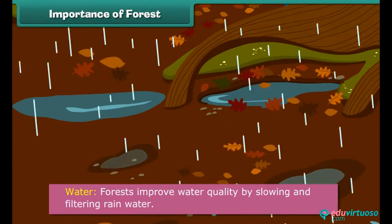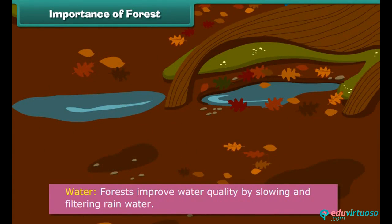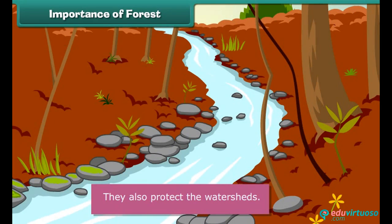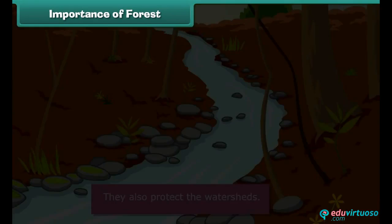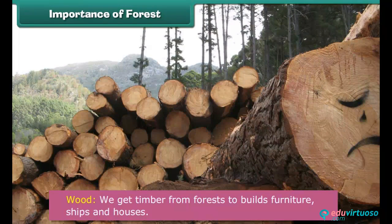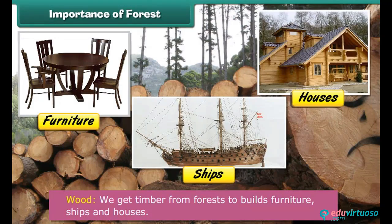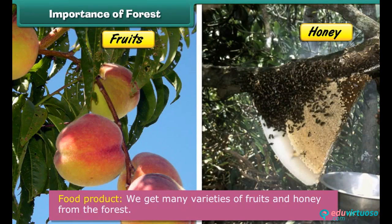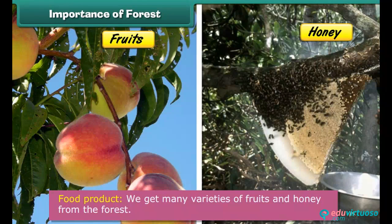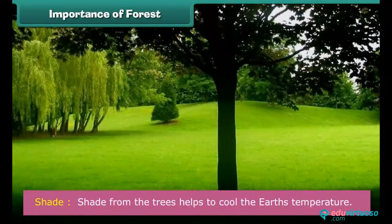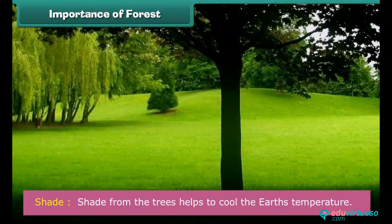Forests improve water quality by slowing and filtering rainwater, and they also protect the watersheds. We get timber from forests to build furniture, ships and houses. We get many varieties of fruits and honey from the forest. By cooling the air and ground around them, the shade from forest trees helps to cool the earth's temperature.